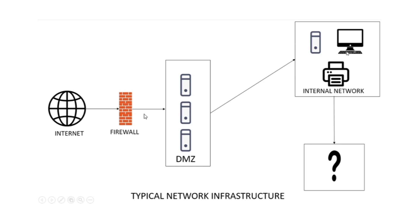In my last video I talked about phishing, which is one of the most effective methods when attacking a target. You send someone on the internal network a mail with something malicious, and once the person clicks on it, you have access straight into the internal network. There are instances where your phishing attempt won't work, and then you have to go through the slow process of going through the DMZ to find any opening that gives you access to the internal network.